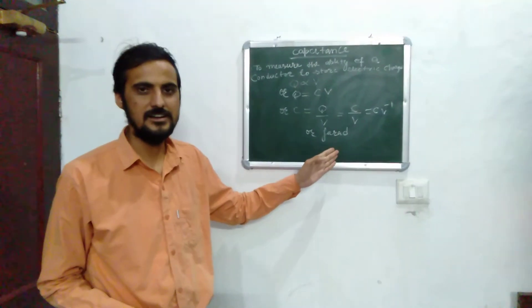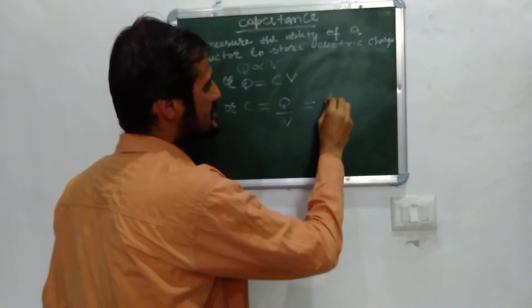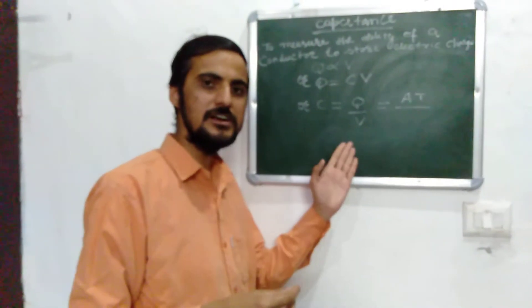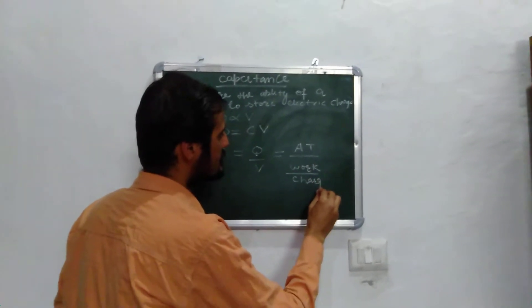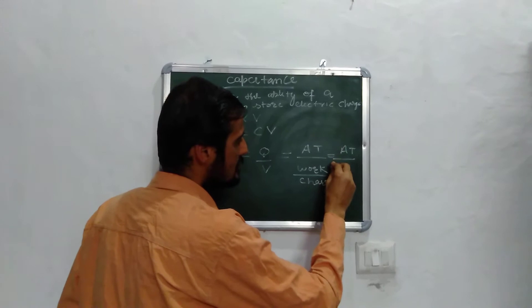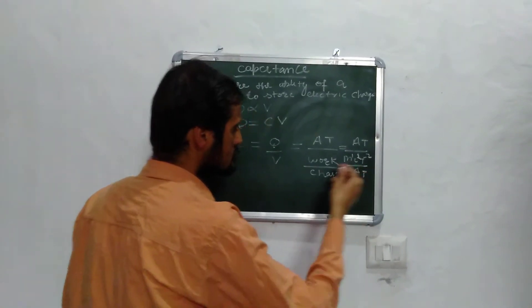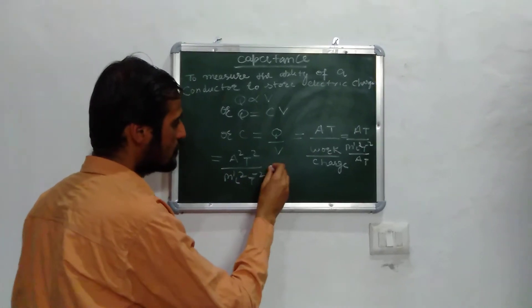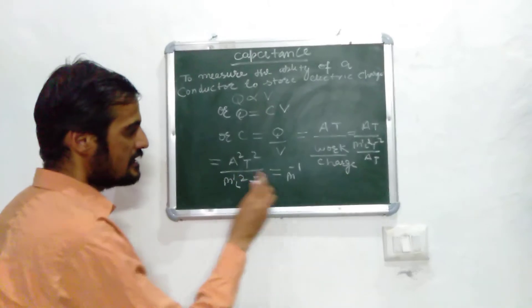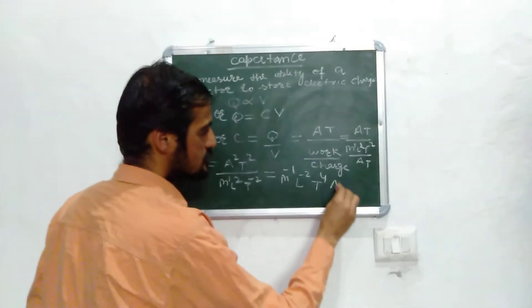Now we will discuss the dimensional formula of capacitance. C equals Q upon V. The dimension of charge Q is [AT]. The dimension of potential difference V equals work upon charge, giving [ML²T⁻²] upon [AT]. Solving, we get C = [A²T²] upon [ML²T⁻²], which simplifies to [M⁻¹L⁻²T⁴A²], the dimensional formula of capacitance.